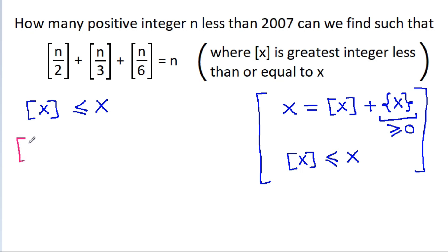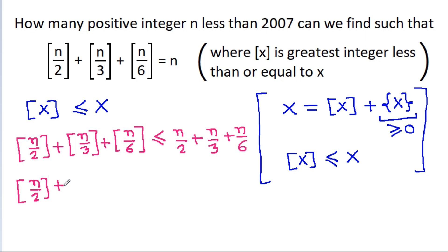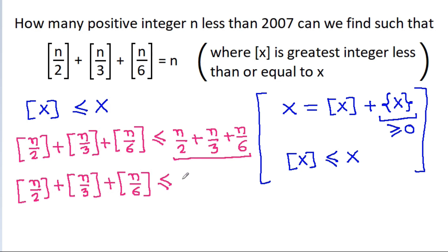So, greatest integer of n by 2 plus greatest integer of n by 3 plus greatest integer of n by 6 will be less than or equal to n by 2 plus n by 3 plus n by 6, which equals n.